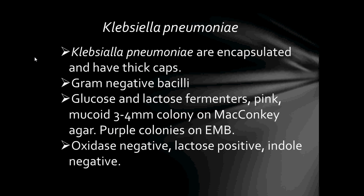The next bacteria we are going to look at is Klebsiella pneumoniae. Klebsiella pneumoniae are encapsulated and have thick capsules. They are Gram-negative bacilli, glucose and lactose fermenters. They form pink mucoid colonies 3–4 mm in diameter on MacConkey agar and purple colonies on EMB. EMB stands for Eosin Methylene Blue, also known as Levine's formulation. It is a slightly selective stain for Gram-negative bacteria — a blend of eosin and methylene blue stains in the ratio of 6 to 1. It also provides a color indicator distinguishing between organisms that ferment lactose.